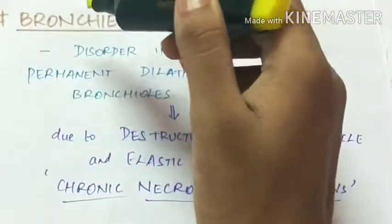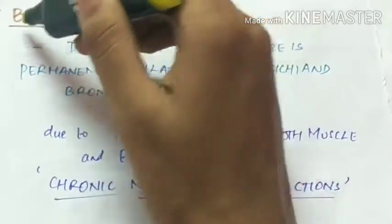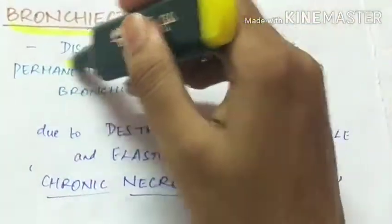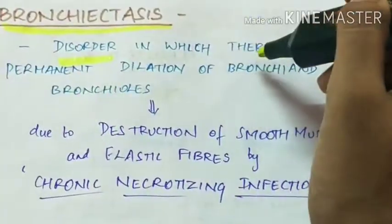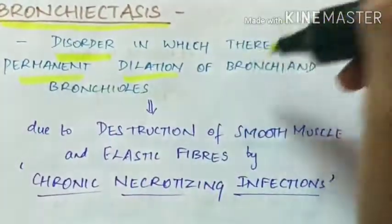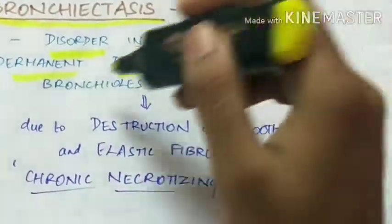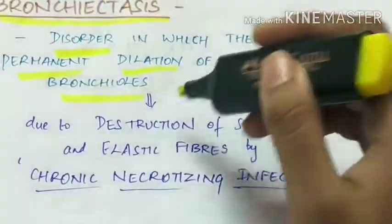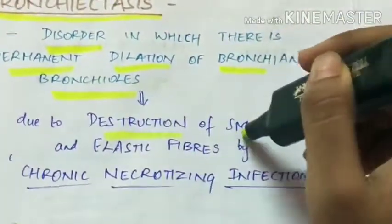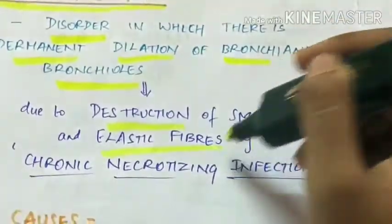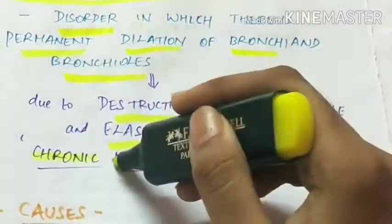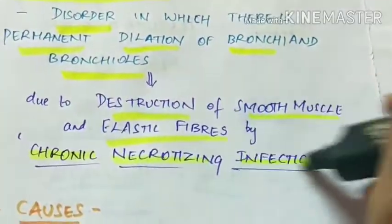The next obstructive lung disease is bronchiectasis. This is a disorder in which there is permanent dilation of bronchi and bronchioles, due to destruction of smooth muscle and elastic fibers by chronic necrotizing infections.